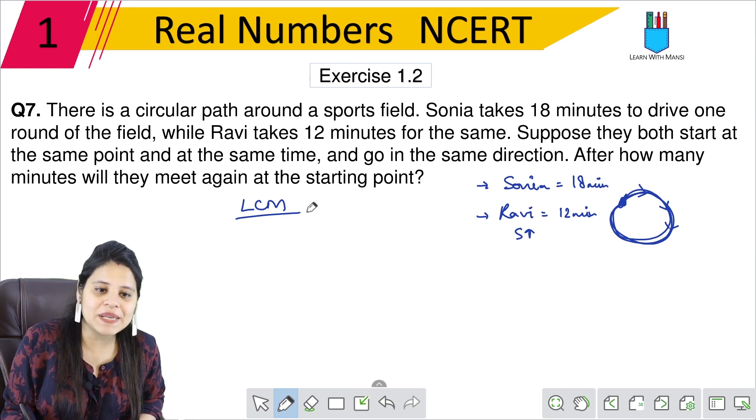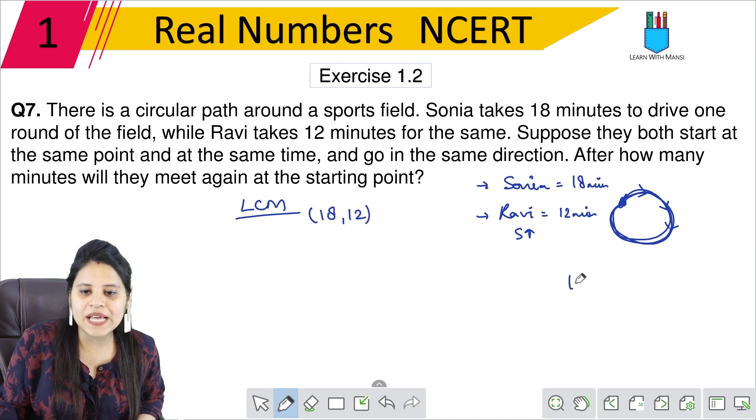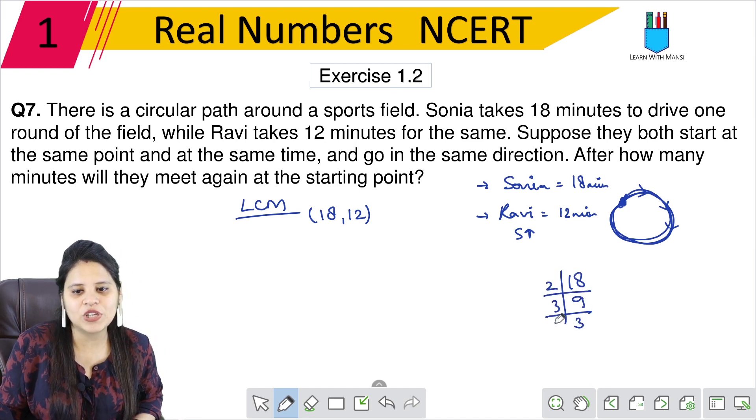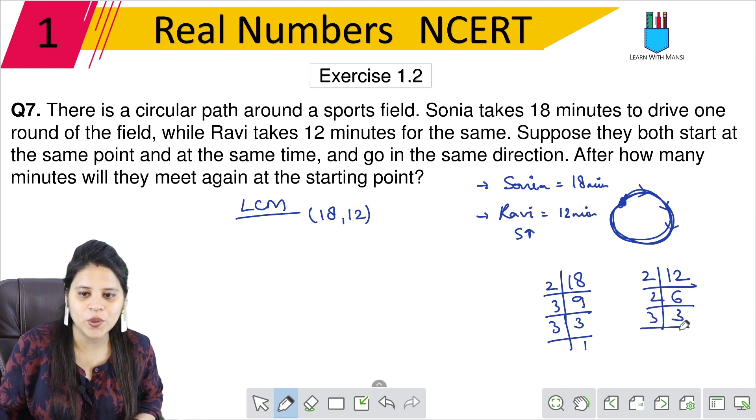So LCM of 18 and 12. We will find 18's factors first. 18 divided by 2 is 9, 9 divided by 3 is 3, 3 divided by 3 is 1. Now 12's factors: 12 divided by 2 is 6, 6 divided by 2 is 3, 3 divided by 3 is 1.